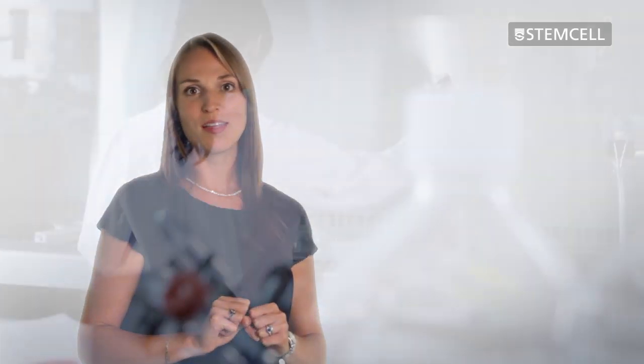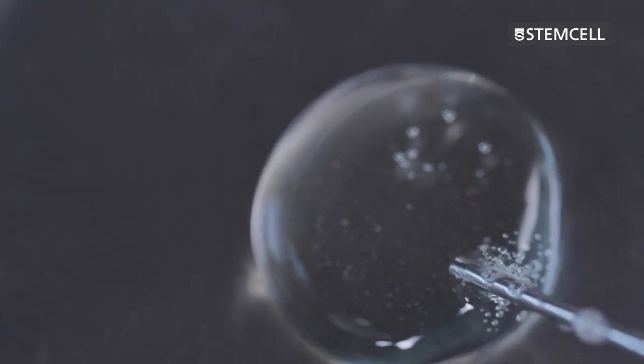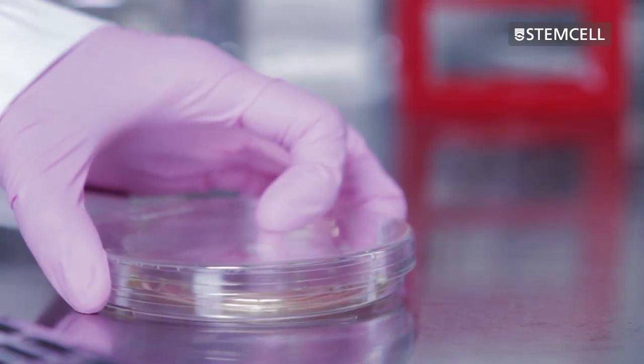In semi-solid cloning, individual cells are physically separated from each other by suspending them in a viscous semi-solid medium. Cultures are plated as a single cell suspension, with each cell immobilized within the semi-solid medium.